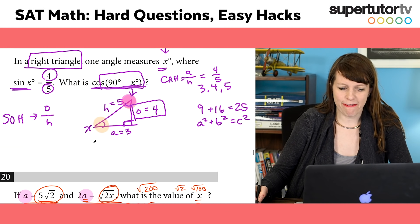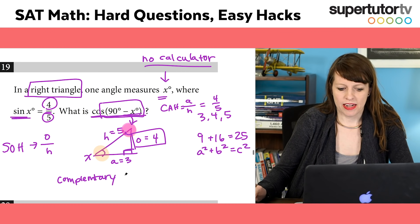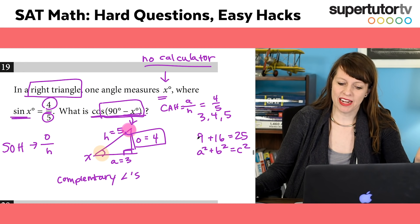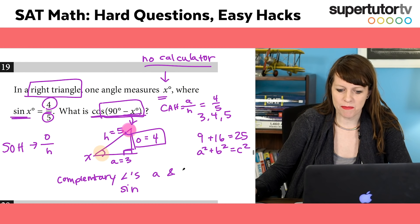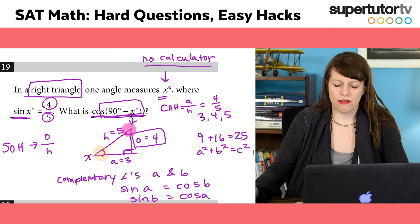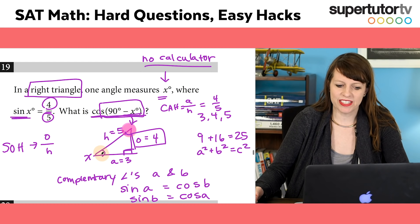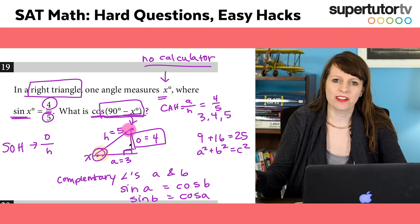Which brings me to this fun fact: if you have two complementary angles - and complementary angles are any two angles who sum to 90 degrees - the sine of A equals the cosine of B, and the sine of B equals the cosine of A. So the sine and the cosine are like reverse. The sine of this angle is going to be the cosine of this angle, and the cosine of this angle is going to be the sine of this angle. So whenever we have complementary angles, that's how it works.